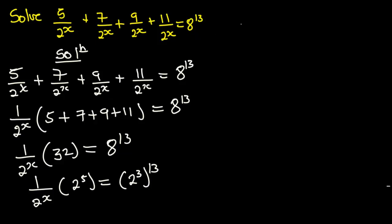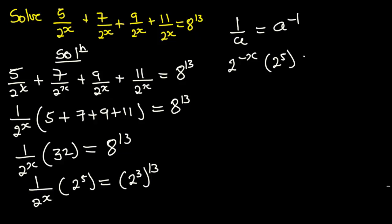We are going to use this rule: when we have 1 over a, this is the same as a to the power negative 1. So we are going to convert this into that form, giving us 2 to the power negative x multiplying 2 to the power 5.